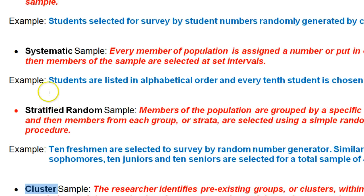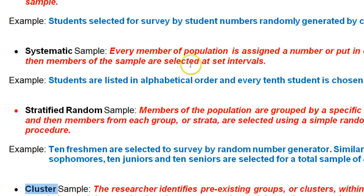Another sampling method is called systematic. That's where you use some sort of system, like you pick every fifth person or every tenth object or something like that. That'll be systematic.